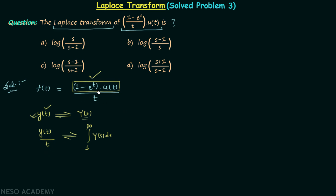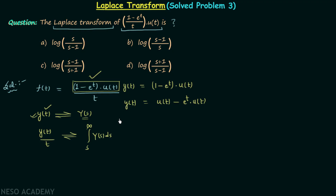We can use this property here since we have a time domain signal divided by t. Let's say the signal in the numerator is y(t), making y(t) equal to (1 minus e^t) multiplied by u(t). Opening the bracket, we have y(t) = u(t) minus e^t multiplied by u(t). We assume the Laplace transform of y(t) is Y(s), and now we take the Laplace transform of both sides.